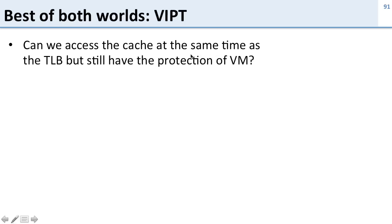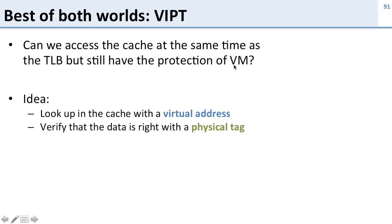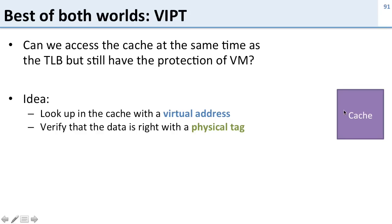Can we get the best of both worlds? Can we access the cache at the same time as the TLB but still have the protection of virtual memory — going straight to the cache without waiting for the TLB but still getting virtual memory protection? The idea is to look up data in the cache using the virtual address, but verify the data is correct using a physical tag. So we use a virtual index to find the cache line, but the tag is a physical address.